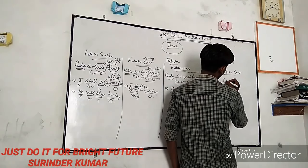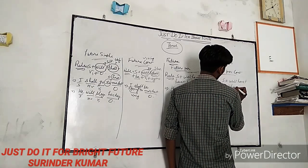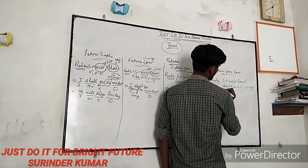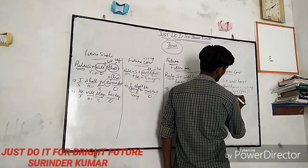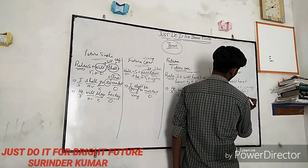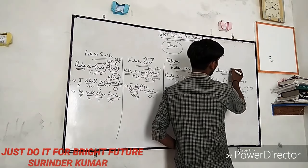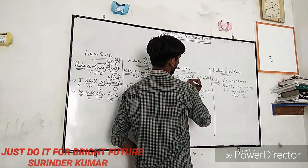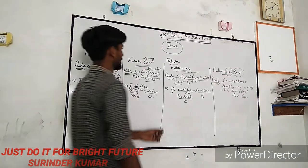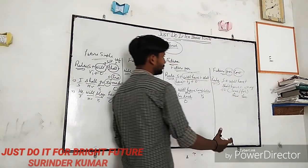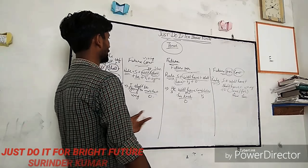The future perfect continuous rule is: Subject + will have / shall have + been + verb first form + ing + object. We also add 'since' or 'for' to indicate a time period, as these relate to a time duration. Without 'since' or 'for', the sentence is complete for future perfect, but for future perfect continuous, you need to combine these rules with the first form plus 'ing'.